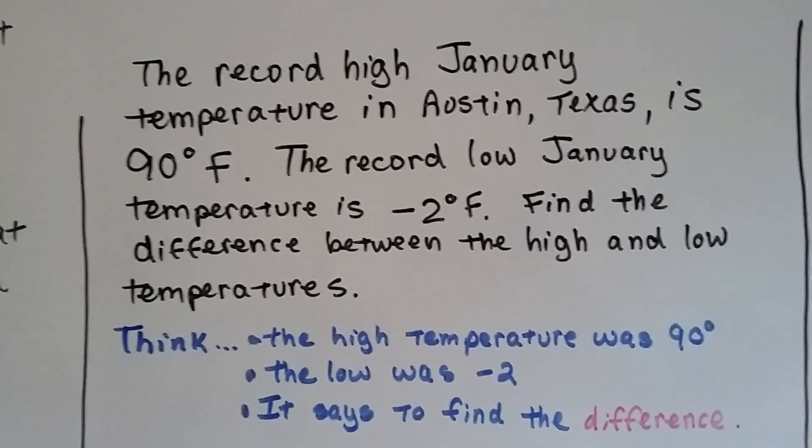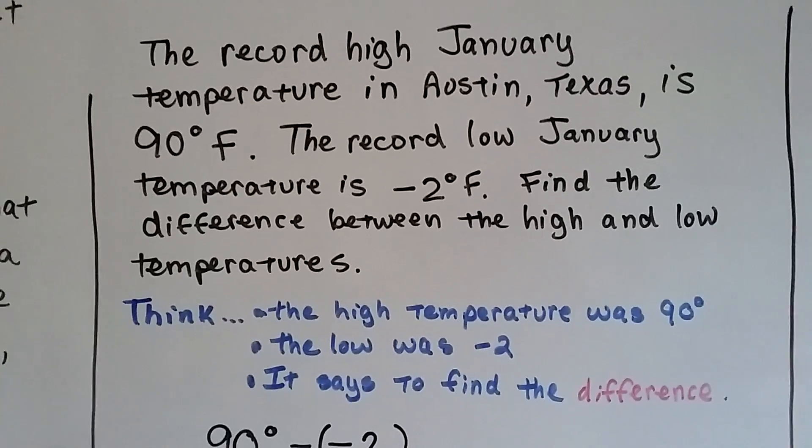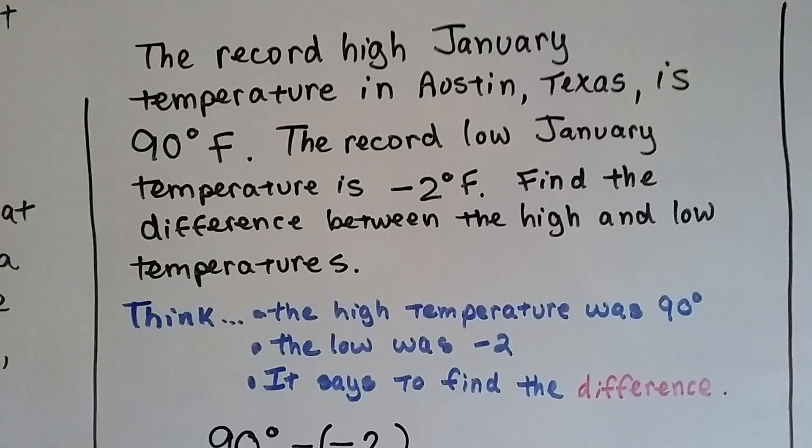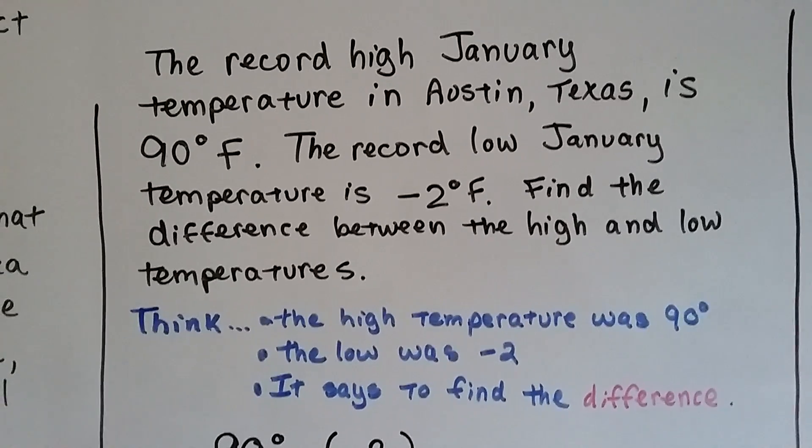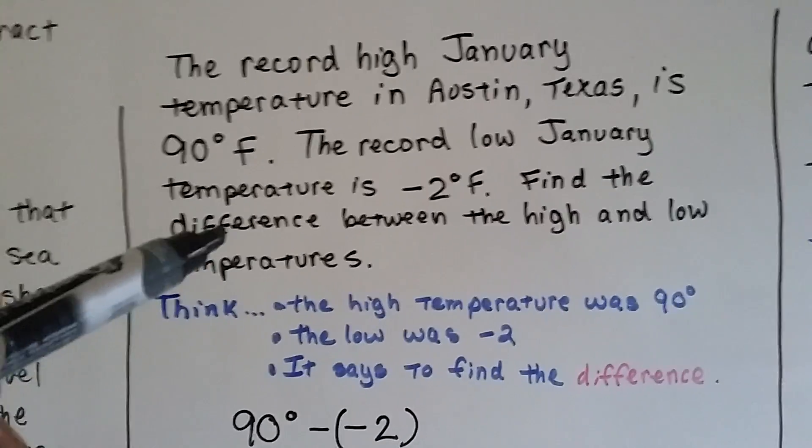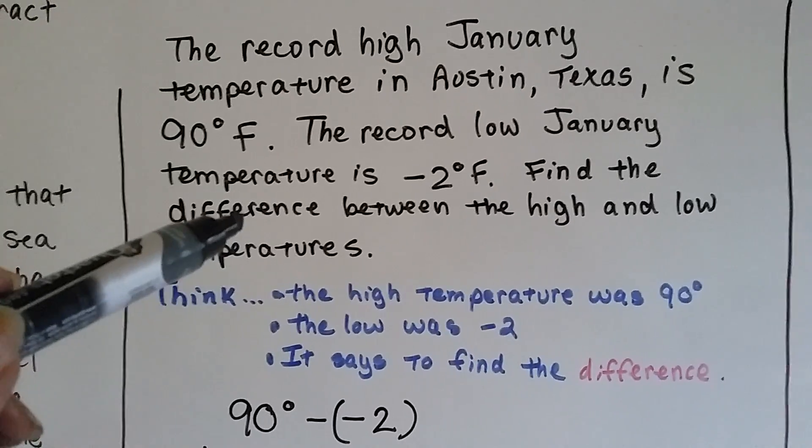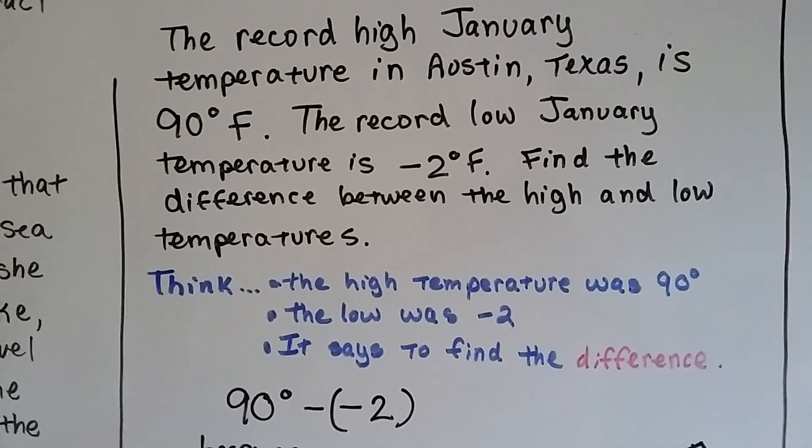Alright, so let's think. The high temperature was 90 degrees. The low was negative 2. It says to find the difference. Well, and this is a subtraction video. So we know we have to write a subtraction problem. But it does say find the difference, and that tells us, because difference is the answer in a subtraction problem, that it is going to be a subtraction problem.